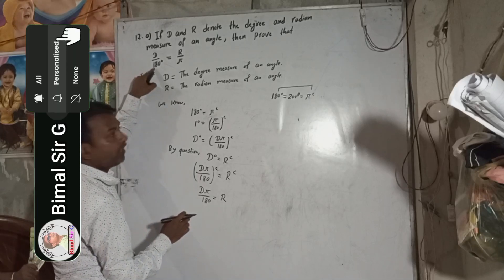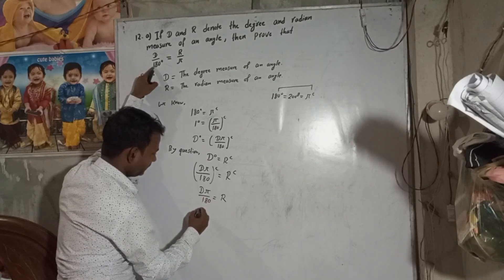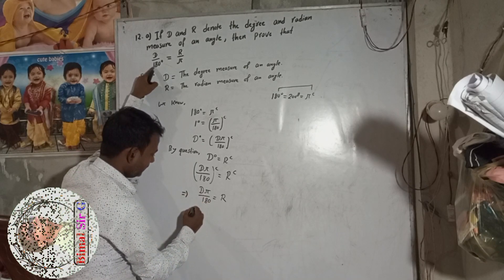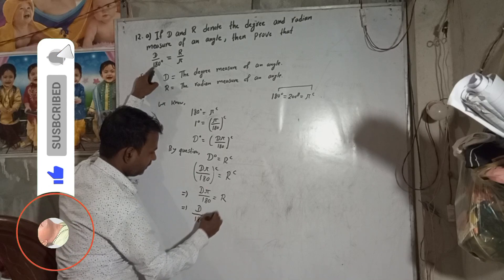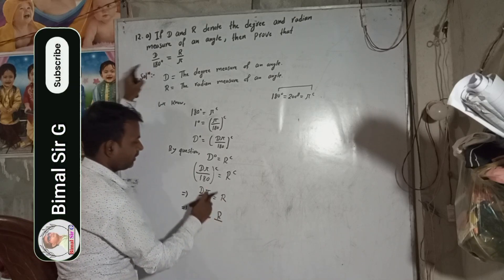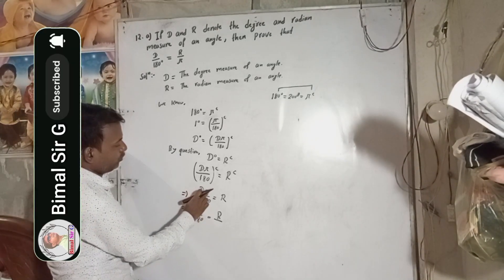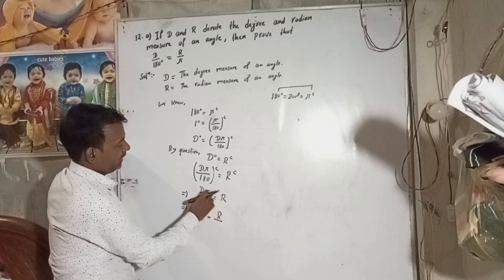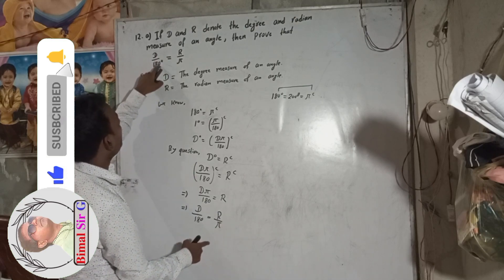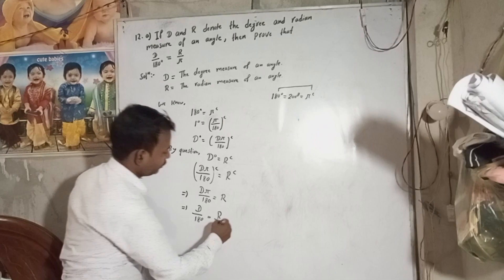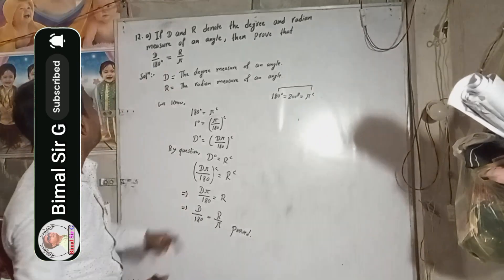Now, we have to prove D by 180 degree equals R by pi. So what we do: this D by 180 — keep D as it is, 180 degree as it is — is equal to R on the same side divided by pi. In the left-hand side, pi is in multiply form, so when it shifts to the right side, multiply becomes divide. So D by 180 degree is equal to R by pi. This is our solution — the complete solution.